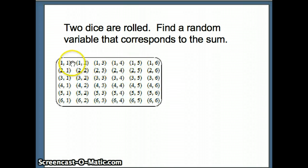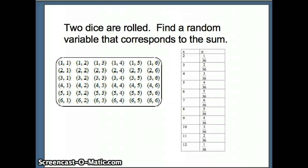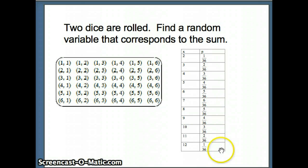Looking at the sample space from 1,1 to 6,6 and examining all possibilities, the sum of 2 shows up 1 time out of 36, the sum of 3 shows up 2 times out of 36, the sum of 4 shows up 3 times out of 36. The complete random variable has numerical outcomes from 2 through 12, where 7 is the highest frequency value showing up 6 times out of 36, and 12 shows up just 1 time out of 36.